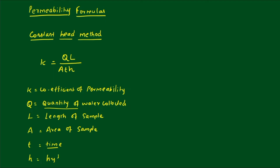Using this formula, we can calculate the coefficient of permeability using the constant head method. The constant head method experiment is done in the laboratory with a constant head tank — there is inflow, outflow, and overflow available. From that, we can calculate the coefficient of permeability using the permeometer.